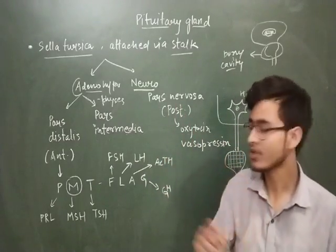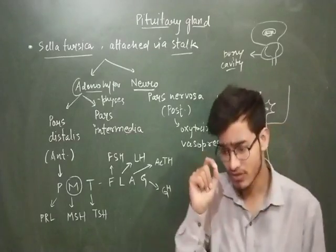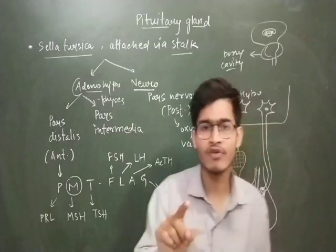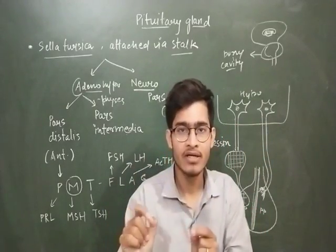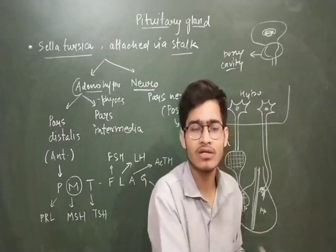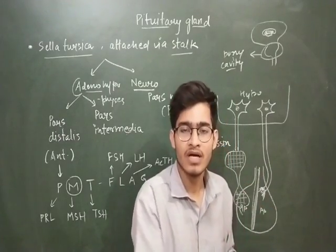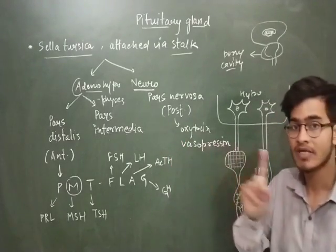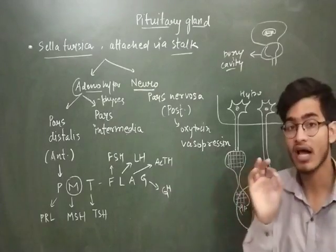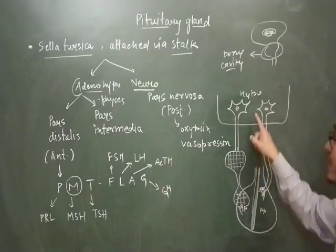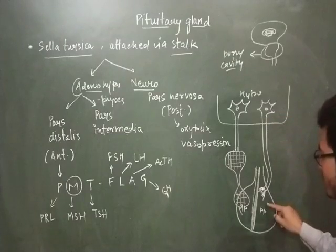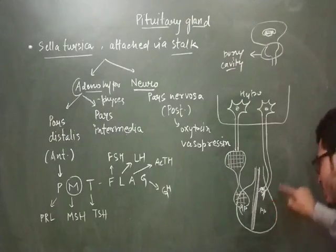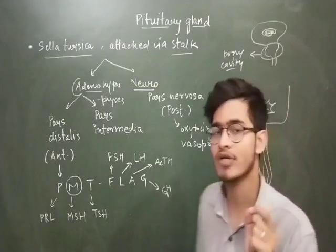Pars nervosa — the posterior pituitary — stores and secretes some hormones, but it does not synthesize them. The hormones are synthesized in the hypothalamus and directly sent to the posterior pituitary via axonal connections, where they are stored and later secreted for their work.